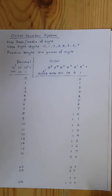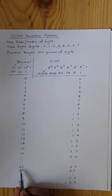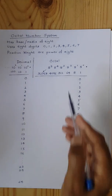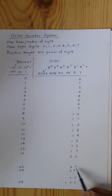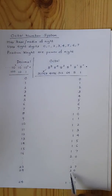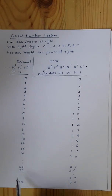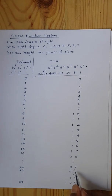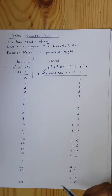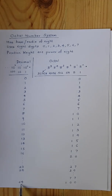Similarly, decimal 23 has the octal equivalent 27 — that is, 2 is written at place value 8, so 2 into 8 is 16 plus 7 equals 23. Decimal 24 is written as 30 in octal: 3 at place value 8 means 8 into 3 is 24 plus 0 equals 24. The numbers increase up to 77, and after that comes 100 in octal. Octal 100 means 1 is written at place value 64, so its decimal equivalent is 64.